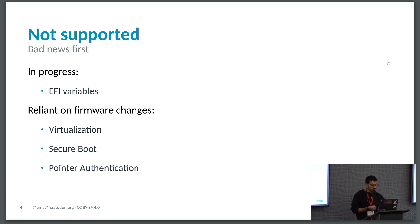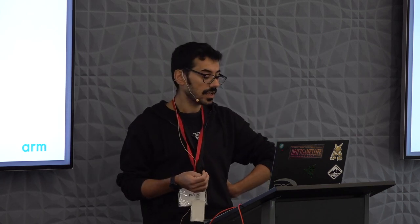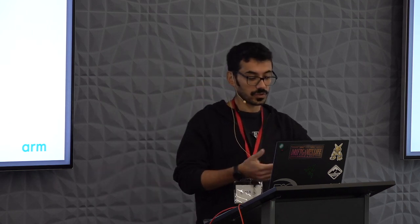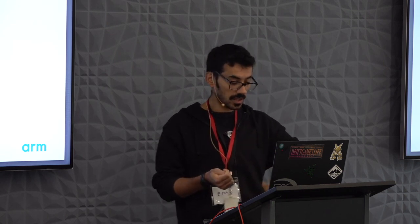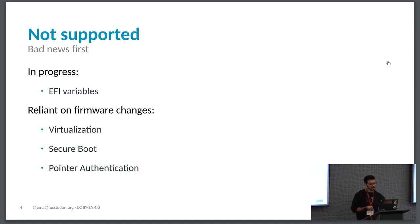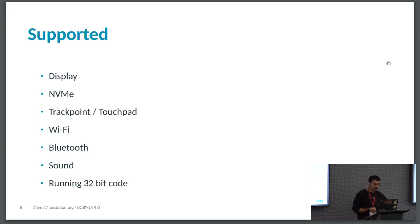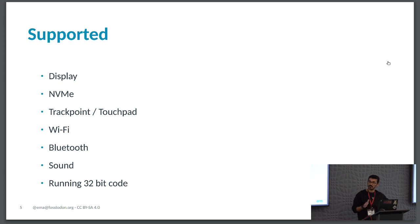There are also a few changes dependent on firmware rather than kernel modifications. What we're still waiting on is firmware changes to get virtualization, secure boot, and pointer authentication to work—pointer authentication is currently not working on the X13S. Good news is that pretty much everything else works: the display, the disk, trackpad, and as of yesterday, sound. You can also run 32-bit code, which you can't do on all ARM64 CPUs—on the X13S you can run ARMHF or ARMEL code at native speed, which is pretty cool.